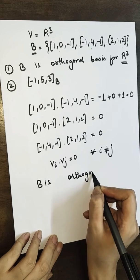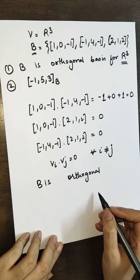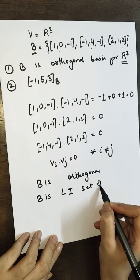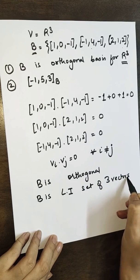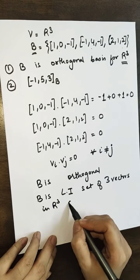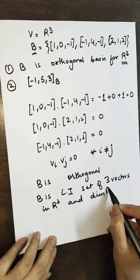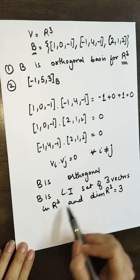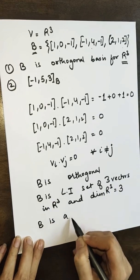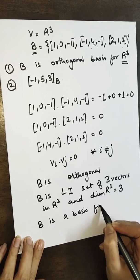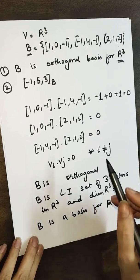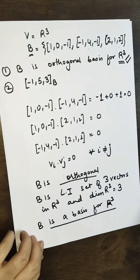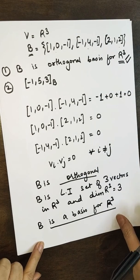Now that B is orthogonal, and we know every orthogonal set is linearly independent, B is a linearly independent set of three vectors in R3. Since the dimension of R3 is 3, these three linearly independent vectors also span R3. Therefore B is a basis for R3, and since it is also orthogonal, B is an orthogonal basis for R3.